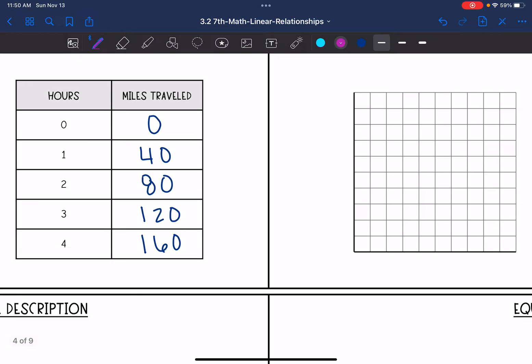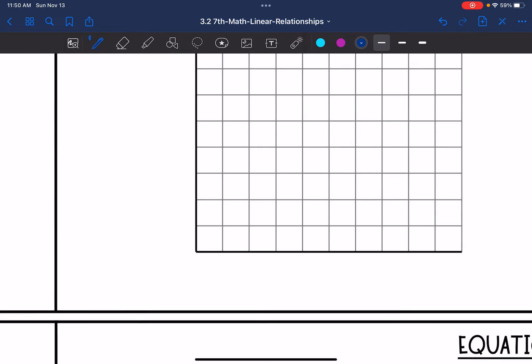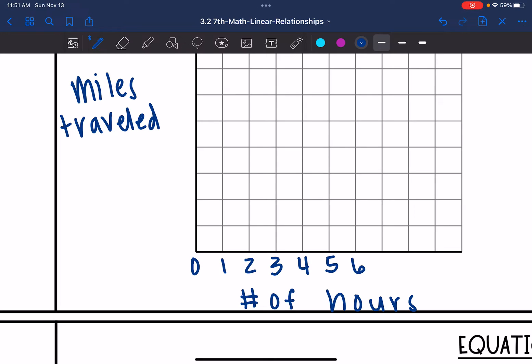So I'm going to start by labeling the x and the y axis. The number of hours would be x and the miles traveled would be y. I just need to fit zero to four hours on here. So I can count by ones on the x axis.